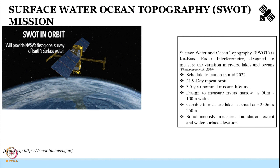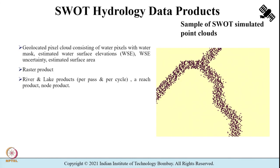Jointly developed by NASA and CNES in partnership with Canadian and UK space agencies, the KA band interferometer on board SWOT is expected to provide spatially continuous 2-dimensional water elevations inside each of its wide swath. The SWOT data is proposed to be made available as Level 2 products consisting of geolocated water pixels with a water mask, estimated water surface elevations, and their associated uncertainty. You can see a sample of the expected data — it will typically look like a point cloud of water surface elevations.